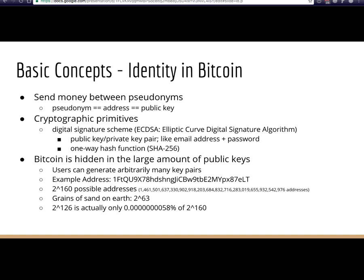Bitcoin also uses a one-way hash function, SHA-256, one of the most powerful and robust available. When you own Bitcoin, you're hiding it among a large number of public keys. You can generate as many key pairs as you want. There are 2^160 possible addresses — to visualize: all grains of sand on Earth is about 2^63, and even if every grain had its own Earth, that collection is only 0.8% of 2^160. That's why guessing someone's private key is essentially impossible. Also, that's my Bitcoin address if you want to send me some.